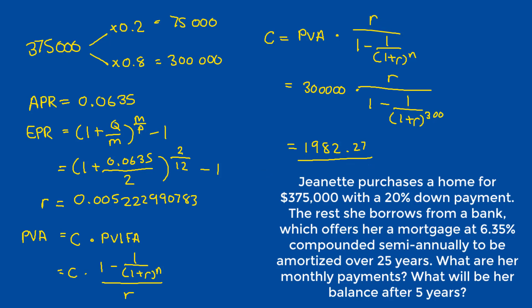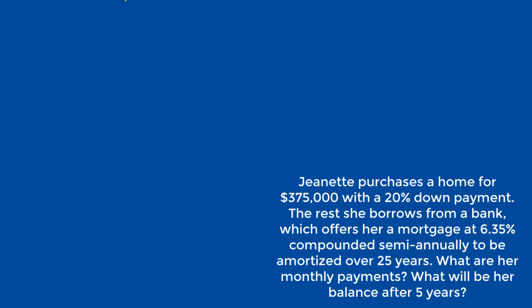And by comparison, the next part is much simpler. We're just using the present value of annuities formula and making a few changes. So PVA is equal to C times 1 minus 1 over 1 plus R raised to N divided by R. Our C value is what we just calculated, or 1,982.27. Our R value is also the same, 0.005222990783.